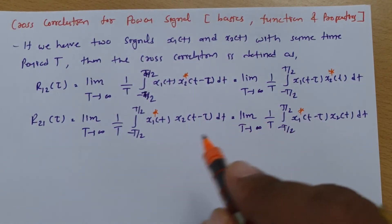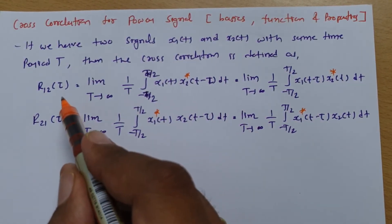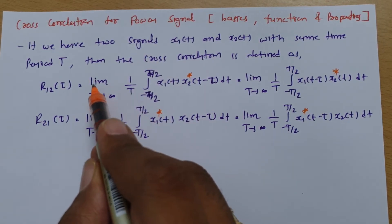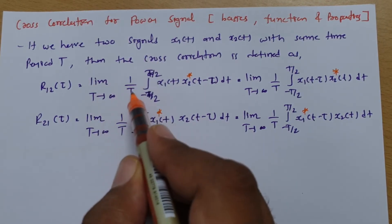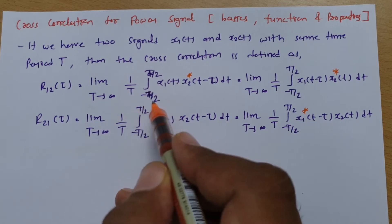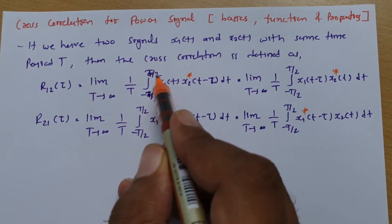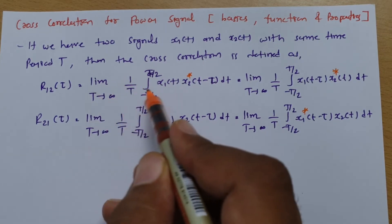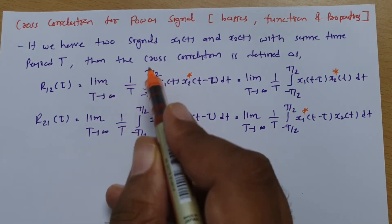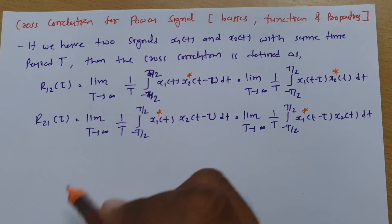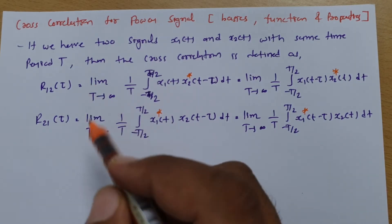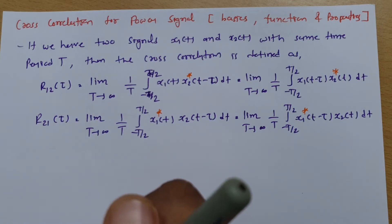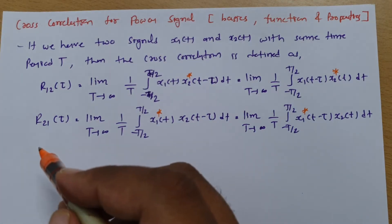This is what we need to keep in mind. For power signal, the new element is the limit T tends to infinity, 1/T, and the integration is from minus T/2 to T/2. For energy signal, we don't need this limit — only integration from minus infinity to infinity is there. So this is the key difference between correlation calculation for power signal and for energy signal.